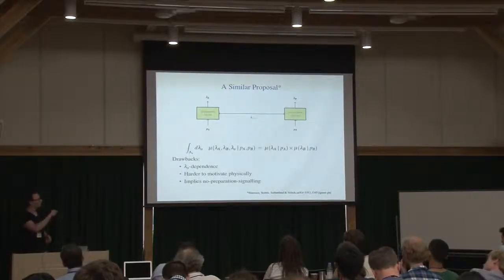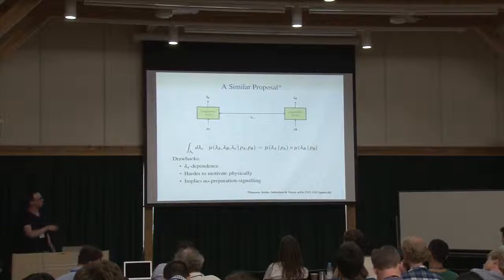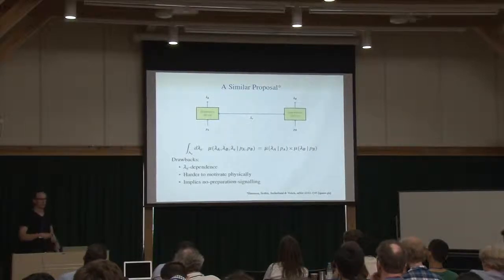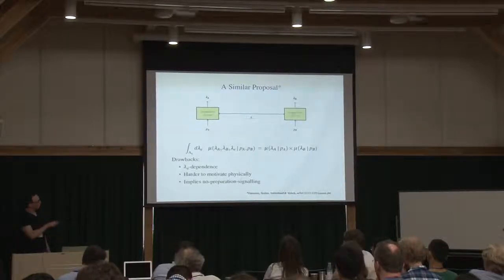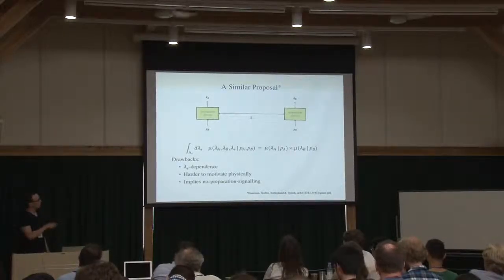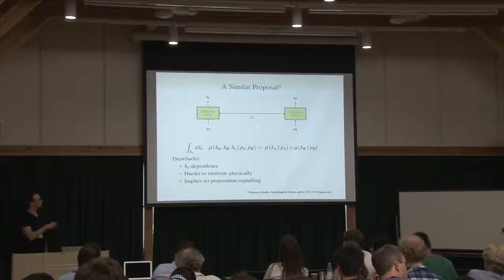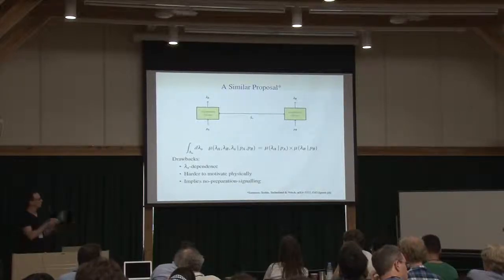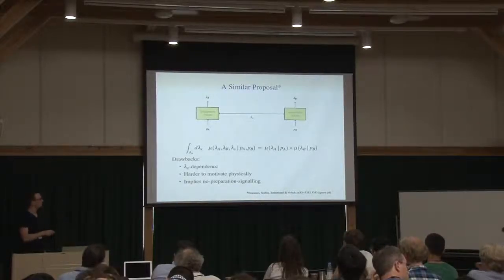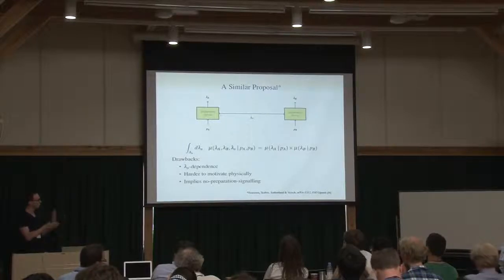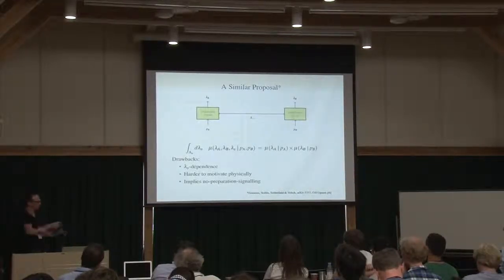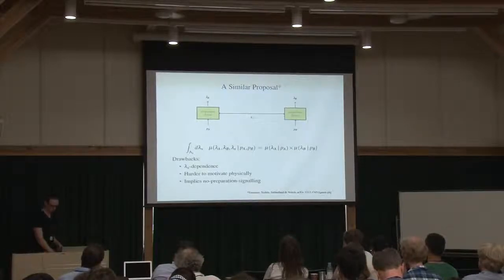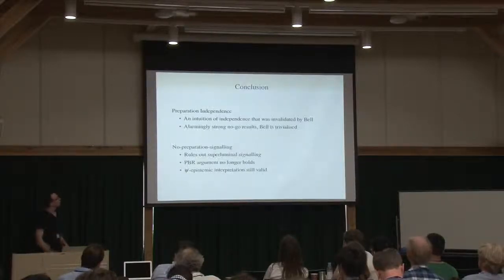Those who are familiar with lambda dependence know that you can use lambda dependence to generate any correlations at all. You can signal, whatever you like. They do impose another constraint which keeps things reasonable, so it's something like effectively getting back to no signalling. I find it harder to motivate physically, but the fact is that it does still imply my condition for no signalling.